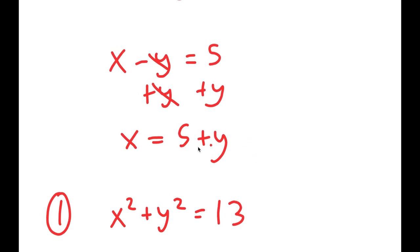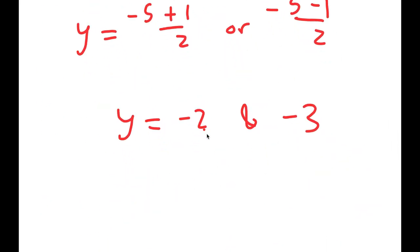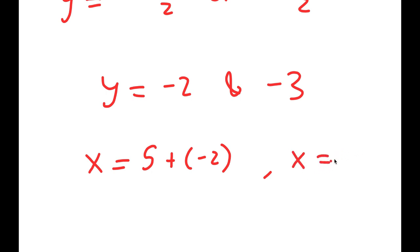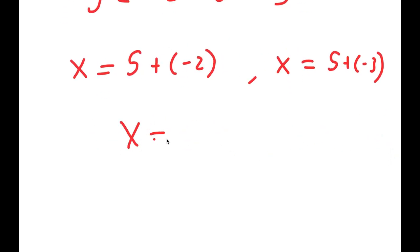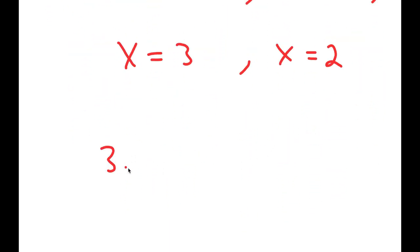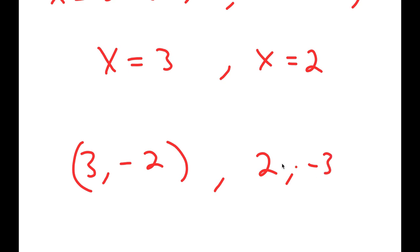Going back, remember x is equal to 5 plus y. So x equals 5 plus negative 2, giving x equals 3, and x equals 5 plus negative 3, giving x equals 2. Therefore my two solutions are (3, negative 2) and (2, negative 3).